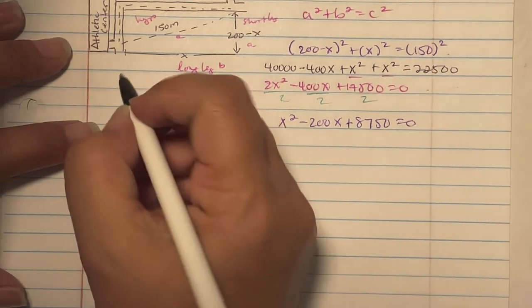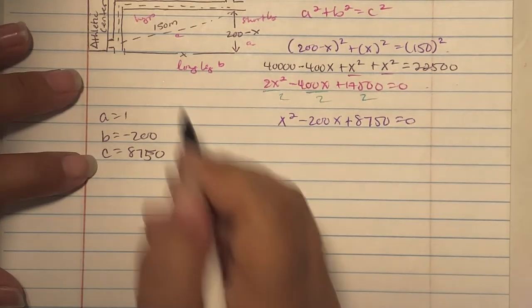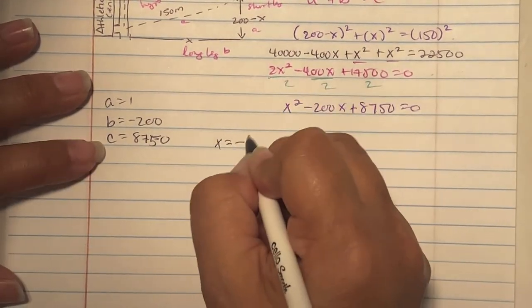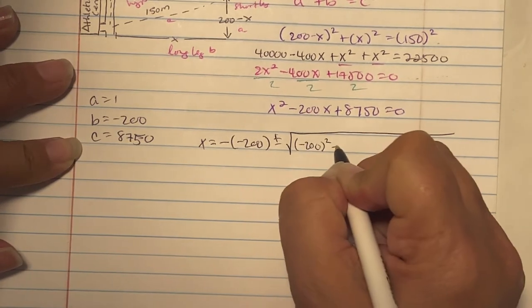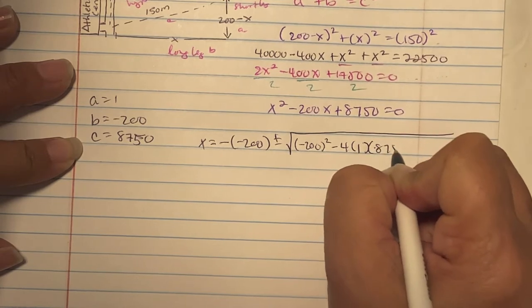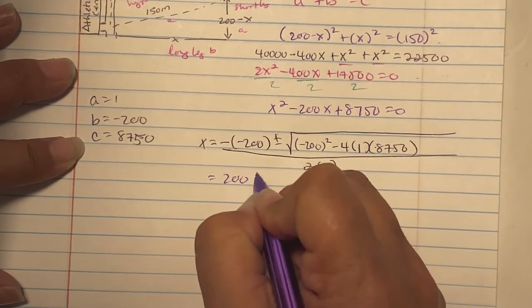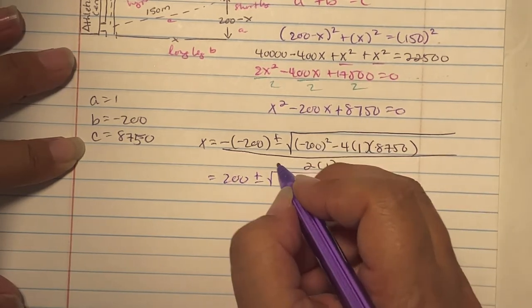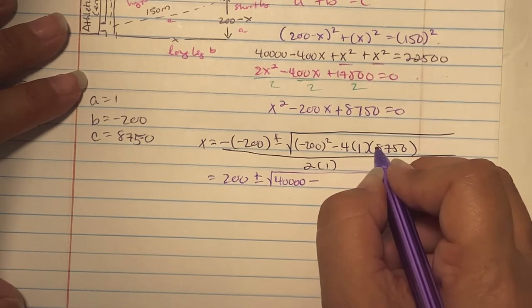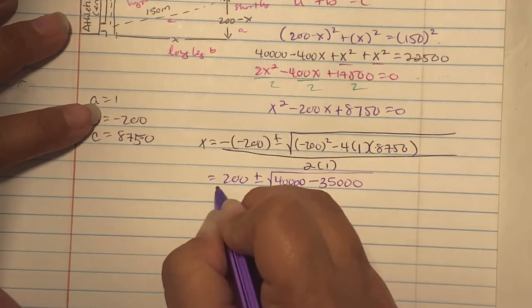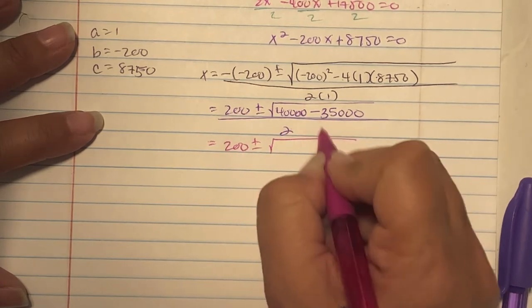A is 1, B is negative 200, C is 8750. So we have X equals negative of negative 200 plus and minus square root of negative 200 squared minus 4 times 1 times 8750, all over 2. We get positive 200 plus and minus the square root of 40,000 minus 35,000, all over 2. 200 plus and minus square root of 5,000 over 2.